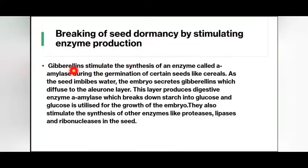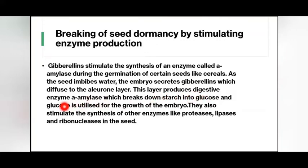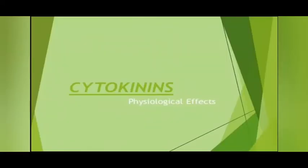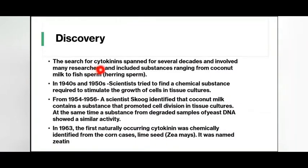Gibberellins also help in breaking seed dormancy by stimulating enzyme production. They stimulate the synthesis of an enzyme called amylase during the germination of certain seeds like cereals. As the seed imbibes water, the embryo secretes gibberellins which diffuse to the aleurone layer. This layer produces the digestive enzyme amylase, which breaks down starch into glucose, and glucose is utilized for the growth of the embryo. Gibberellins also stimulate the synthesis of other enzymes like proteases, lipases, and ribonucleases in the seed.